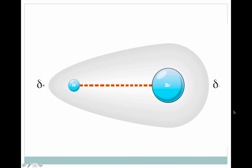I wanted to go over the polarity thing one more time. You can see here this is the electron cloud like we talked about, here are the two atoms. So in a polar bond, the distribution of electrons is uneven — there are more electrons around the bromine atom than the hydrogen, so the bromine actually has a slight negative charge, not a full negative one charge, but a slight negative charge like a magnet. That's polarity: it's uneven distribution of the electron cloud.